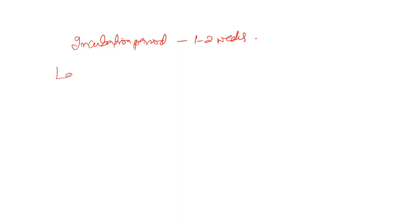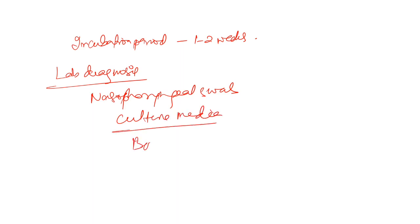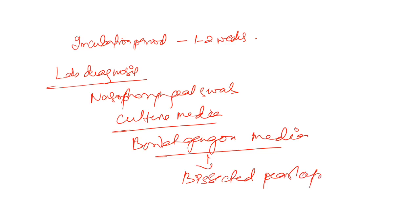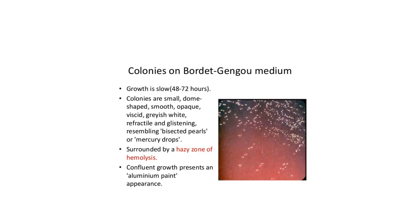Now let's look at the lab diagnosis. So what we do for lab diagnosis, we take the nasopharyngeal swab and we grow it on a culture media. Which culture media? Bordet Gengou media. And what do we see in that Bordet Gengou media? Bisected pearl appearance. Now let's see what is bisected pearl appearance. See? This is colonies on Bordet Gengou media. These are the bisected pearl appearance. You can see.